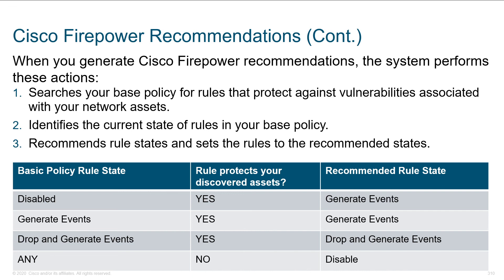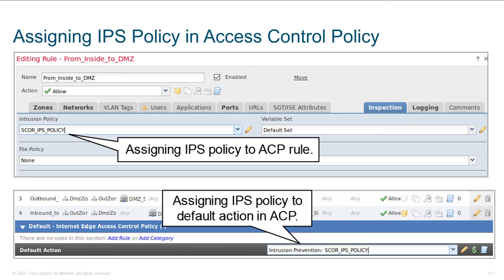Here are the basic policy rule states — whether or not it's going to protect discovered assets, and then finally the recommended rule state. This is what it looks like from the interface itself. Notice under inspection we've got an intrusion policy. The intrusion policy here is called 'score IPS policy,' and that's going to contain all those rules we previously discussed.